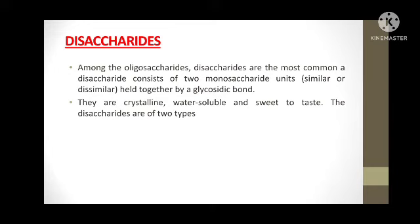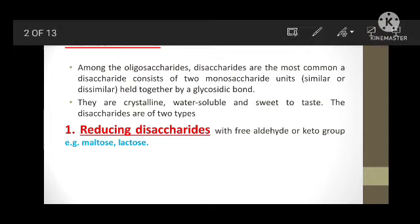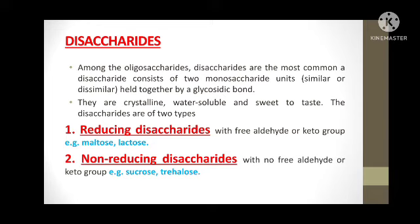Disaccharides are of 2 types. The first type is reducing disaccharides, which contain free aldehyde or ketone groups. Examples are maltose and lactose. The second type is non-reducing disaccharides, which do not contain free aldehyde or ketone groups. Examples are sucrose and trehalose.